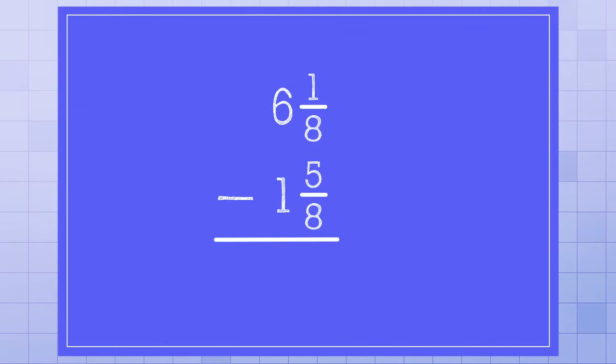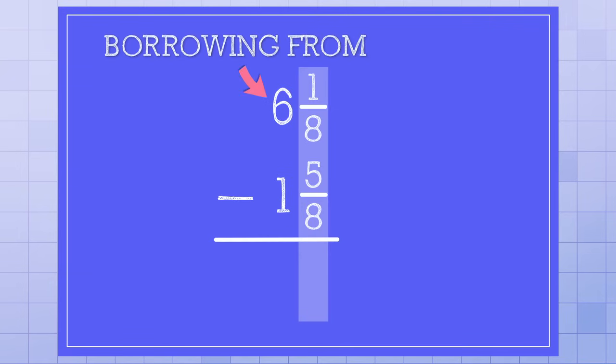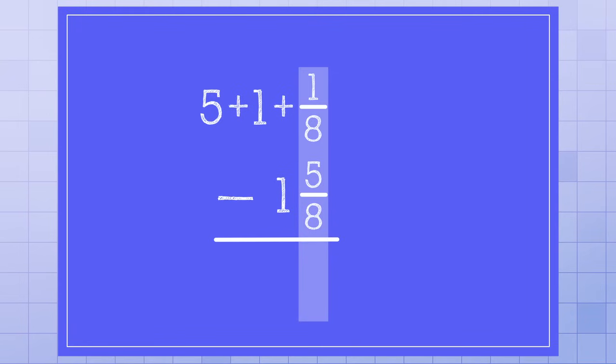Then I need to subtract the fractions. But I notice that the fraction on top is less than the fraction on the bottom, so I need to make the fraction on top bigger by borrowing from the whole number part. I can replace the 6 with 5 plus 1, and I can replace 5 plus 1 with 5 plus 8 over 8 to get the whole fraction I need to add to the top fraction. 8 over 8 plus 1 over 8 is 9 over 8. So now I can subtract the fraction column because the fraction on top is bigger. 9 over 8 minus 5 over 8 is 4 over 8.